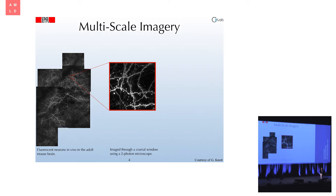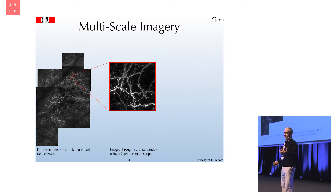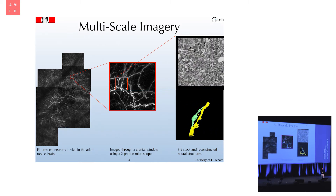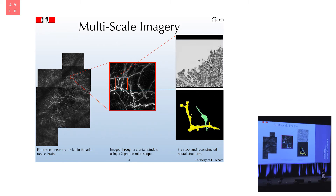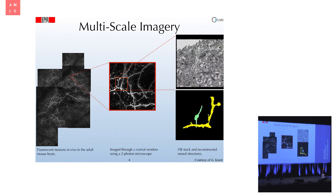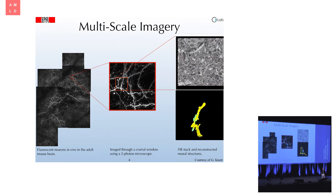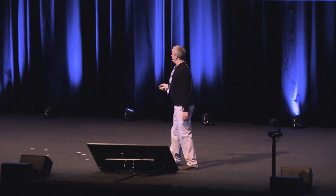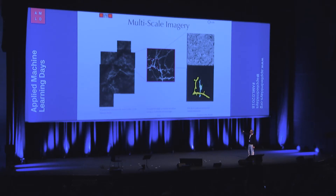If you zoom in a bit more, this spaghetti soup you see are the dendrites and axons — in other words, the wires that connect the neurons. And then you can zoom even more using a different kind of microscope called an electron microscope, which has a much higher resolution. A pixel in the optical image is one micrometer cube, while a dot in the electron microscope image is five nanometer cube — 200 times higher resolution. At this resolution, you can see inside the cells: the neurons, and within them things like mitochondria and synapses.